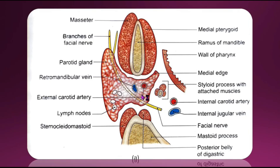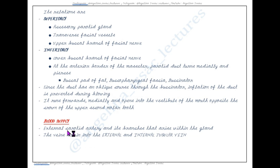Regarding blood supply, the external carotid artery and its branches that arise within the gland supply the parotid gland. The veins drain into the external and internal jugular veins.